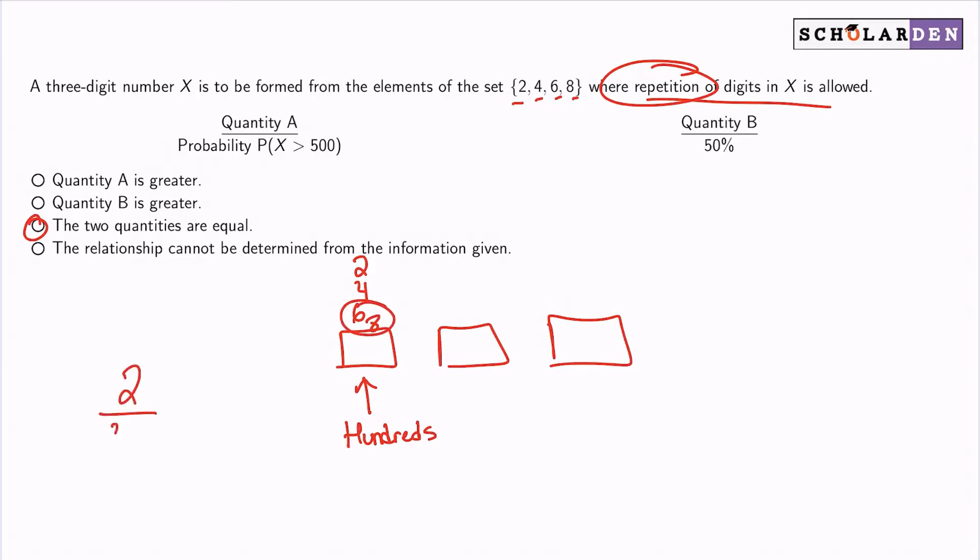So 2 out of the 4 would work in terms of giving us a value greater than 500. And that is equal to 0.5 or 50%. And that's why C is the answer.